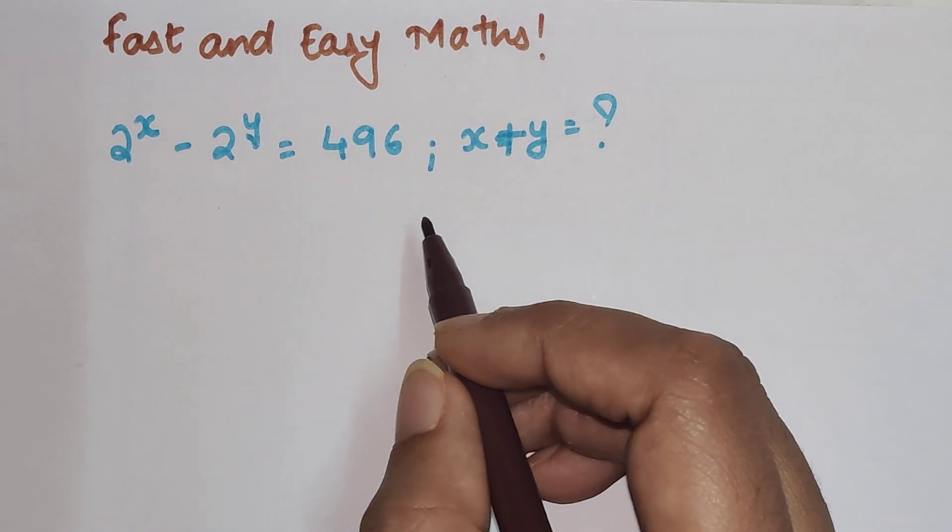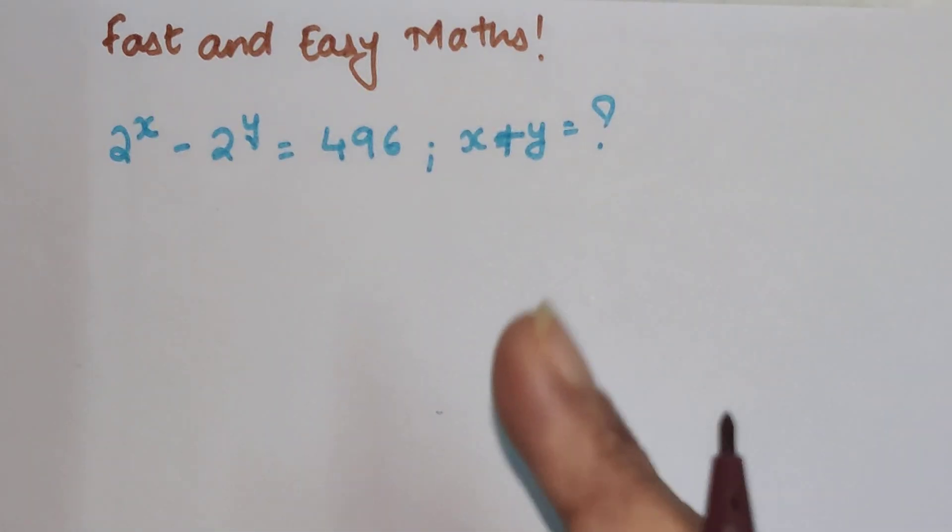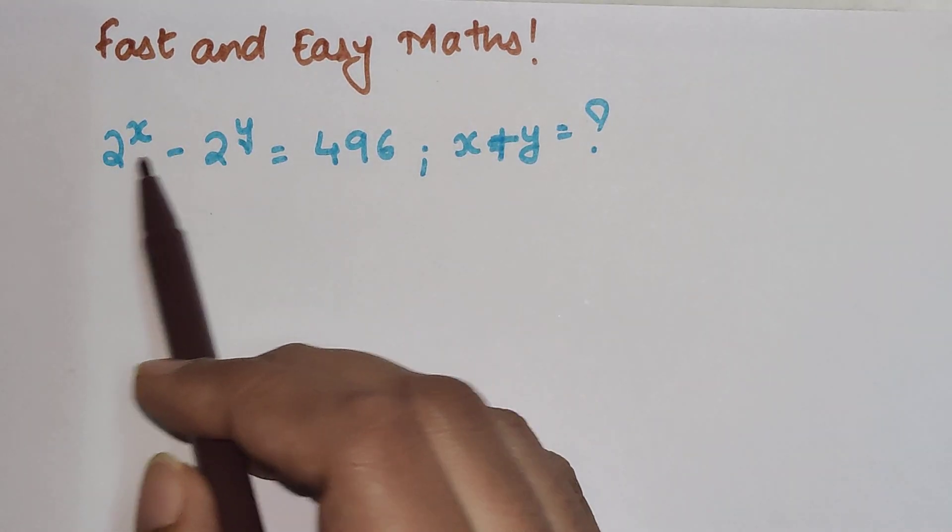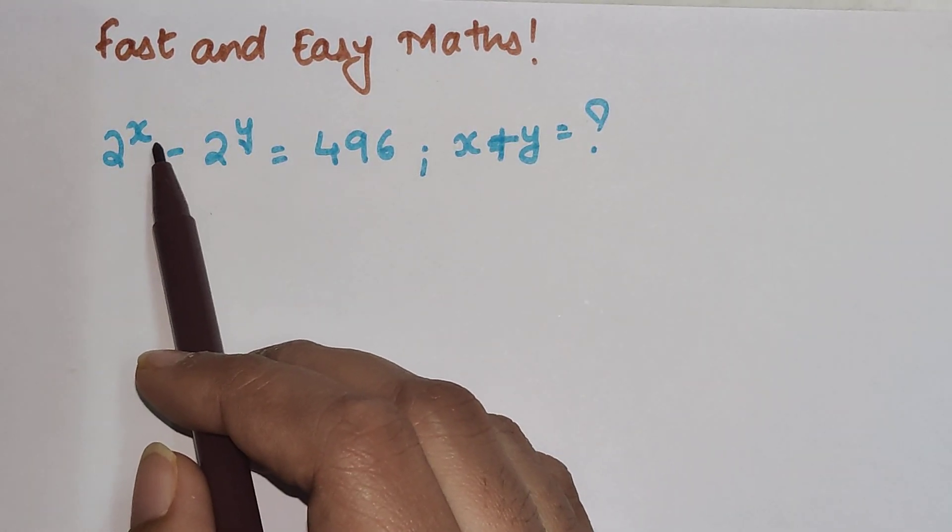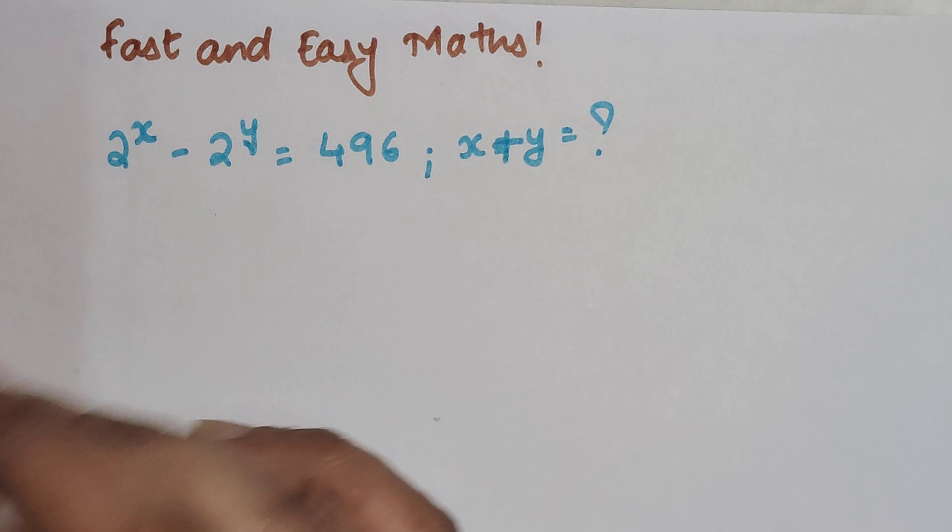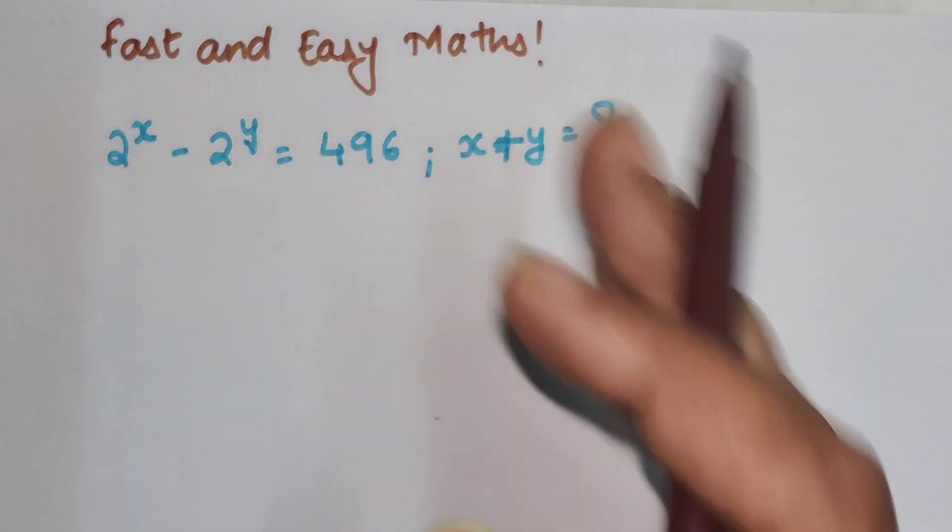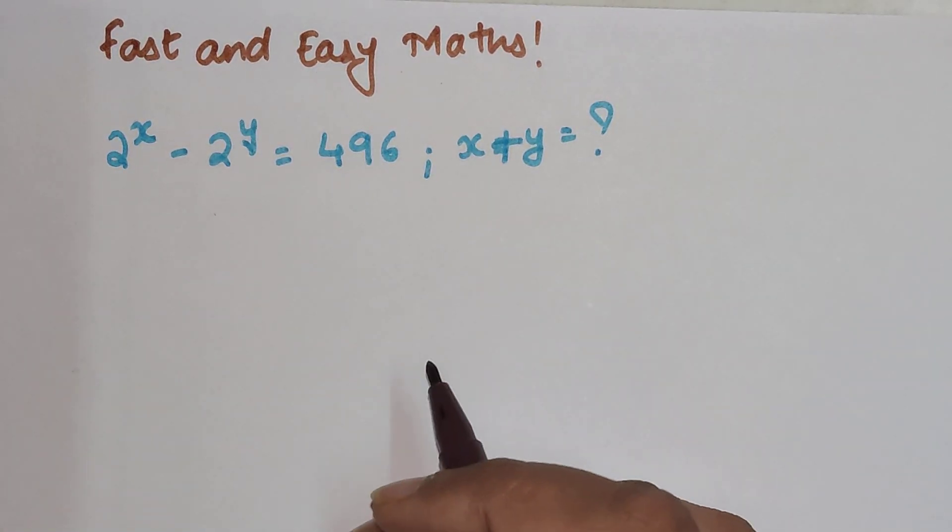In such a case, you should think about something which is very obvious. See here, if we try to put x and y as it is, then it will be very difficult for us to solve this particular question.